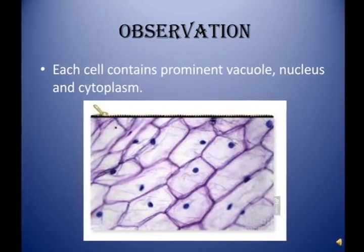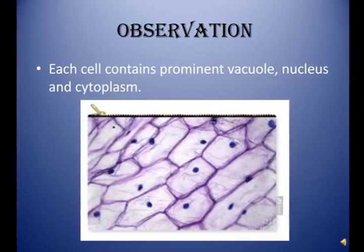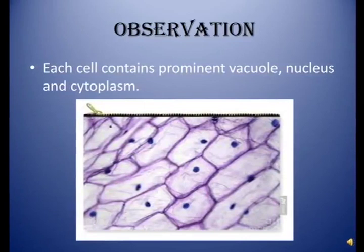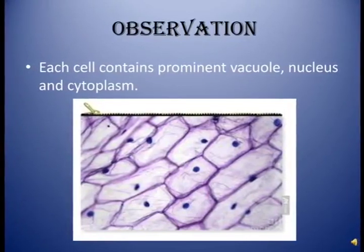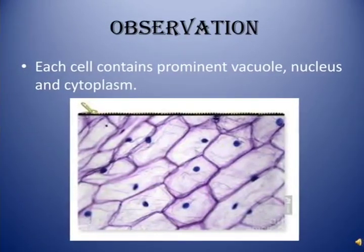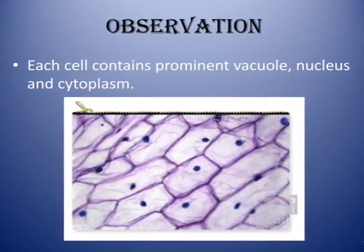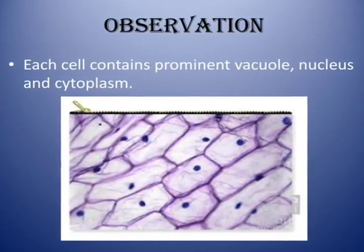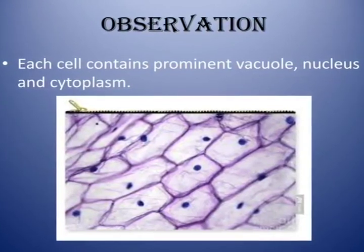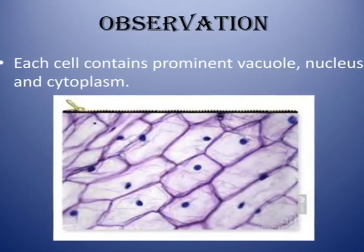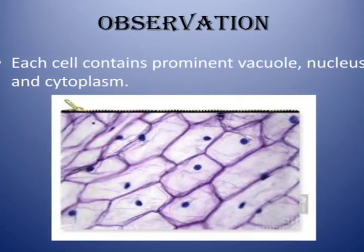Here is the observation. You can clearly see the plant cells — onion cells — under the microscope. Small cell-like structures can be observed. Each cell contains a prominent vacuole, nucleus, and cytoplasm. You can also easily see the cell walls, because onion is a plant cell and we know that plant cells have a cell wall.